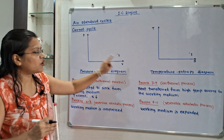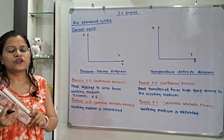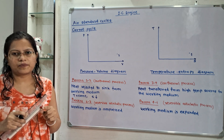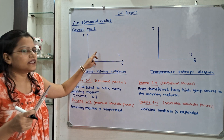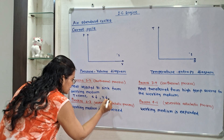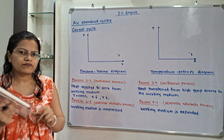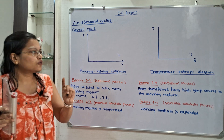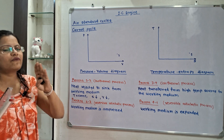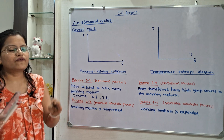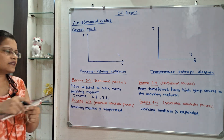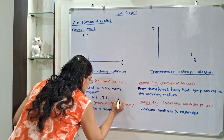Now, what is the effect on volume during heat rejection? When heat is rejected, compression of the air takes place, so the volume is getting decreased. Since pressure and volume are always opposite to each other — when volume decreases, pressure increases — we have to show that pressure P is getting increased.